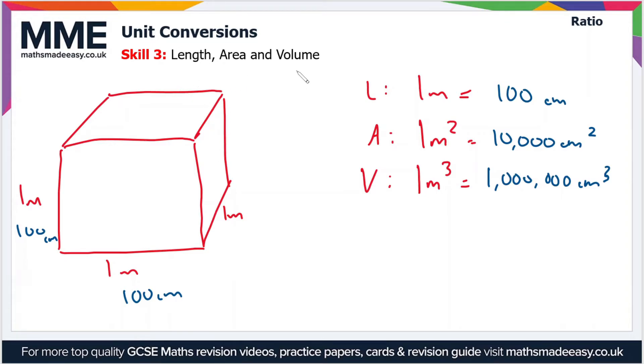We'll do another example just to illustrate the point. So let's look at centimeters. One centimeter, and we'll convert between centimeters and millimeters. So one centimeter is 10 millimeters, but what about one centimeter squared? That's one centimeter by one centimeter.